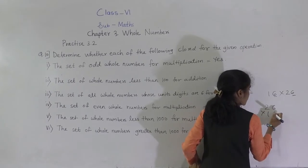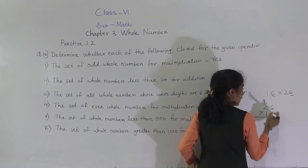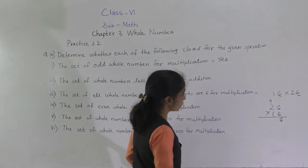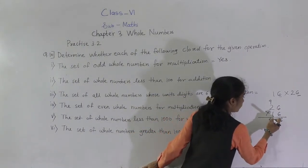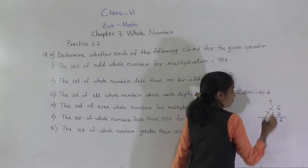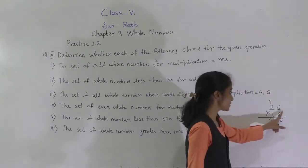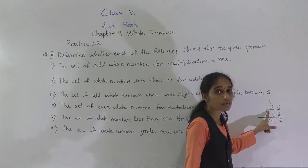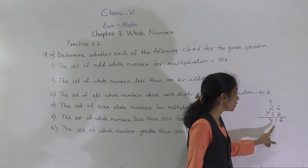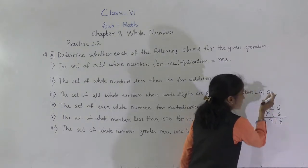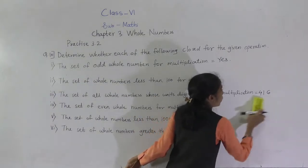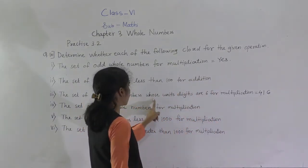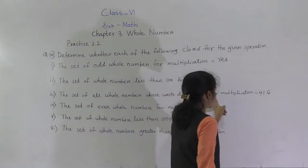26 into 16: 16 into 6 are 96, so write 6 and carry 9. 16 into 2 are 32, plus 9 is 41. So again you got 6 in the units place, and it is also a whole number. So the set of all whole numbers whose units digit is 6 is closed for multiplication.